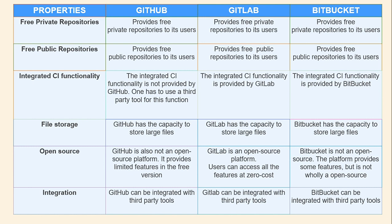Let's compare these three. For private repositories, GitHub, GitLab, and Bitbucket all provide free private repositories. Free public repositories are also provided by all three. Regarding integrated CI functionality, GitHub does not provide integrated CI and requires a third-party tool, while GitLab and Bitbucket both provide integrated CI functionality natively. For file storage, all three — GitHub, GitLab, and Bitbucket — have the capacity to store larger files.